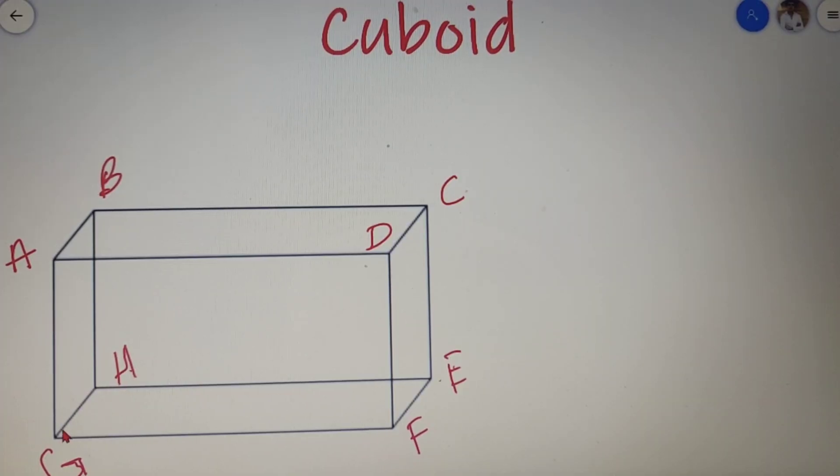The straight line that joins the two opposite vertices of two different faces in a cuboid is called as the body diagonal of the cuboid. So I can say that the diagonal GC is the body diagonal of the cuboid. A cuboid has in total of 12 face diagonals and 4 body diagonals.